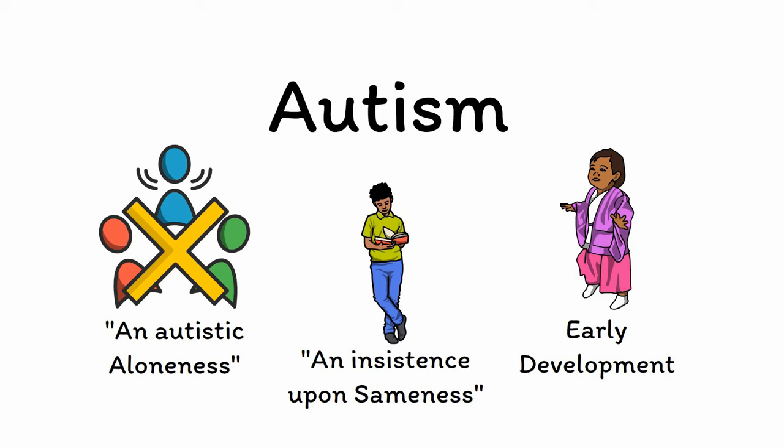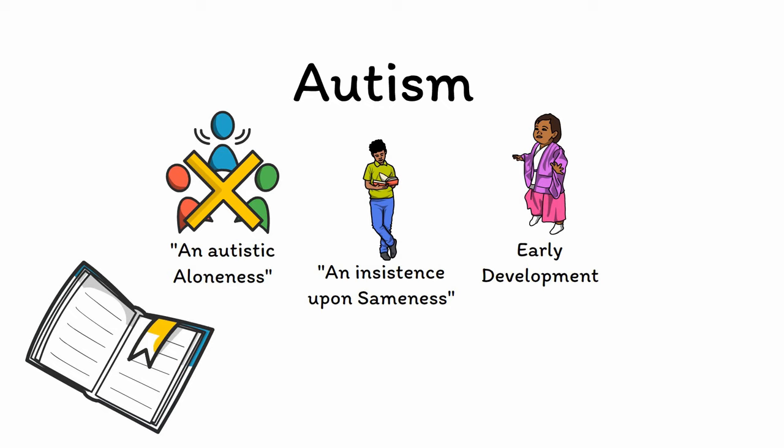Unlike many of the other disorders we've talked about, which involve long lists of diagnostic criteria, the DSM criteria for autism are so simple that we've actually covered them already in their entirety. Patients who have both difficulties in social communication and restricted interest in activities, noticeable during early development, can be diagnosed with autism, with the usual caveats that these symptoms must cause significant impairment and that they cannot be better accounted for by other disorders.